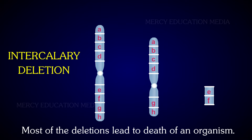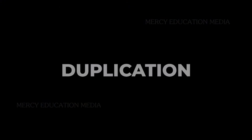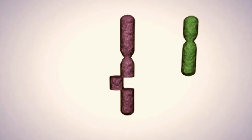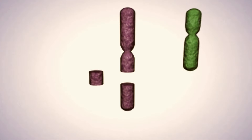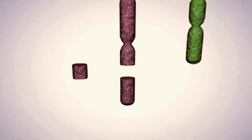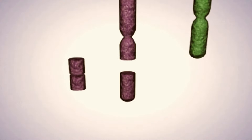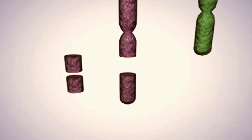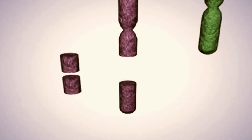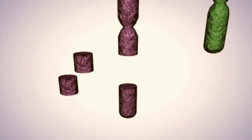Most of the deletions lead to death of an organism. When a segment of a chromosome is present more than once in a chromosome, then it is called duplication.